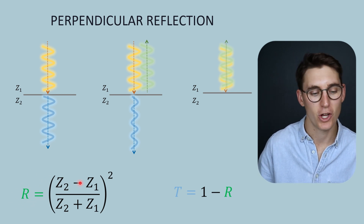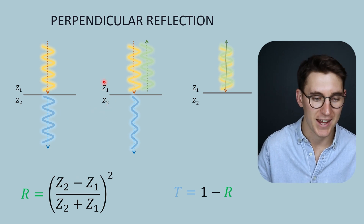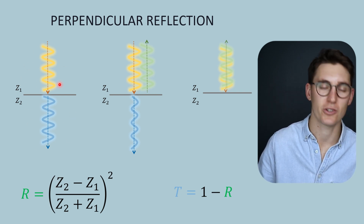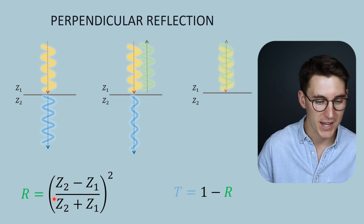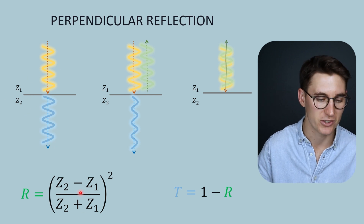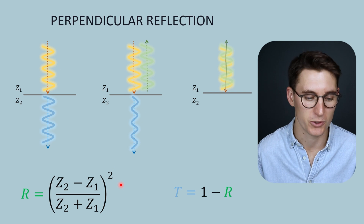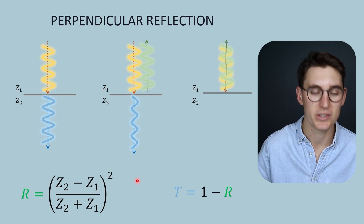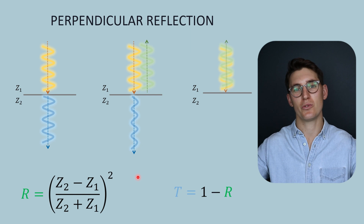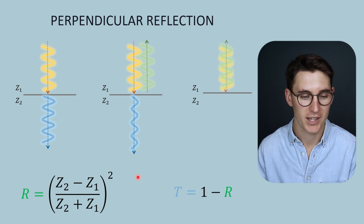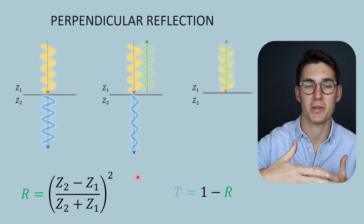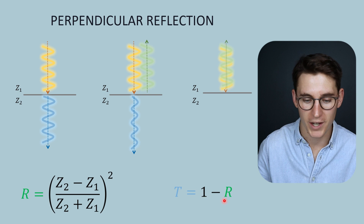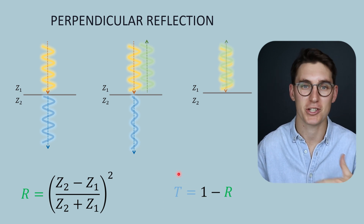To calculate the reflectance value, we take the difference between the second acoustic impedance and the first acoustic impedance, then divide by the sum of those two acoustic impedances, and square the result. This gives us a percentage value for how much will be reflected back. This value will never exceed one, since the difference between two values can never exceed their sum. And because energy in a system must be conserved, one minus the reflectance value gives us the transmittance — how much is transmitted through the tissue.